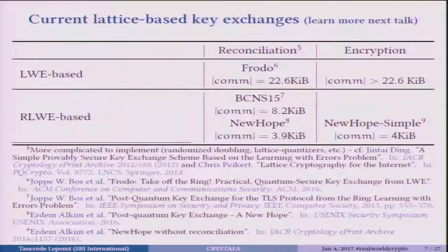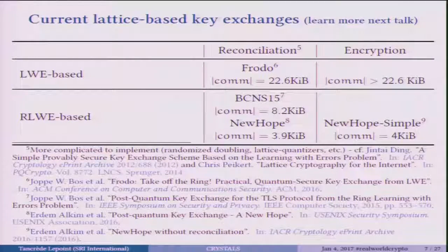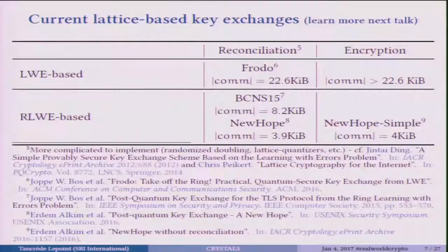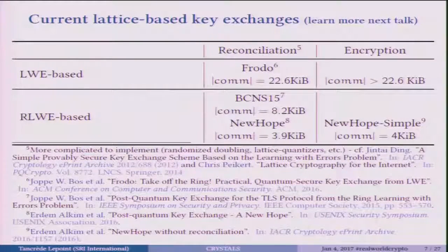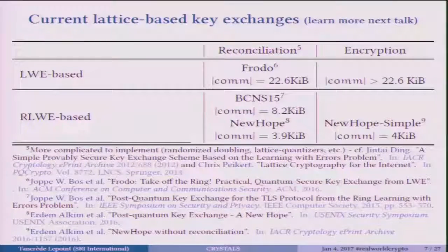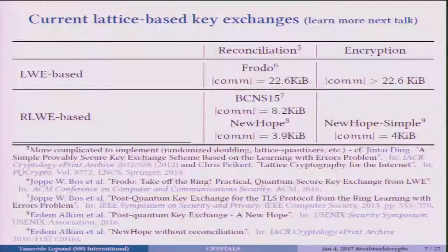If we look at what exists based on lattices, we have basically two main families. The first one is based on LWE — for example, the candidate Frodo. Frodo has a communication of 22 kilobytes, and it's based on a reconciliation mechanism that is a little more complicated to implement than basic encryption. And also you have NewHope, which received a lot of publicity especially since Google experimented with it. There's also the BCNS15 scheme, and recently the authors of NewHope did an encryption version of NewHope where they don't use reconciliation, but still end up with similar communication.